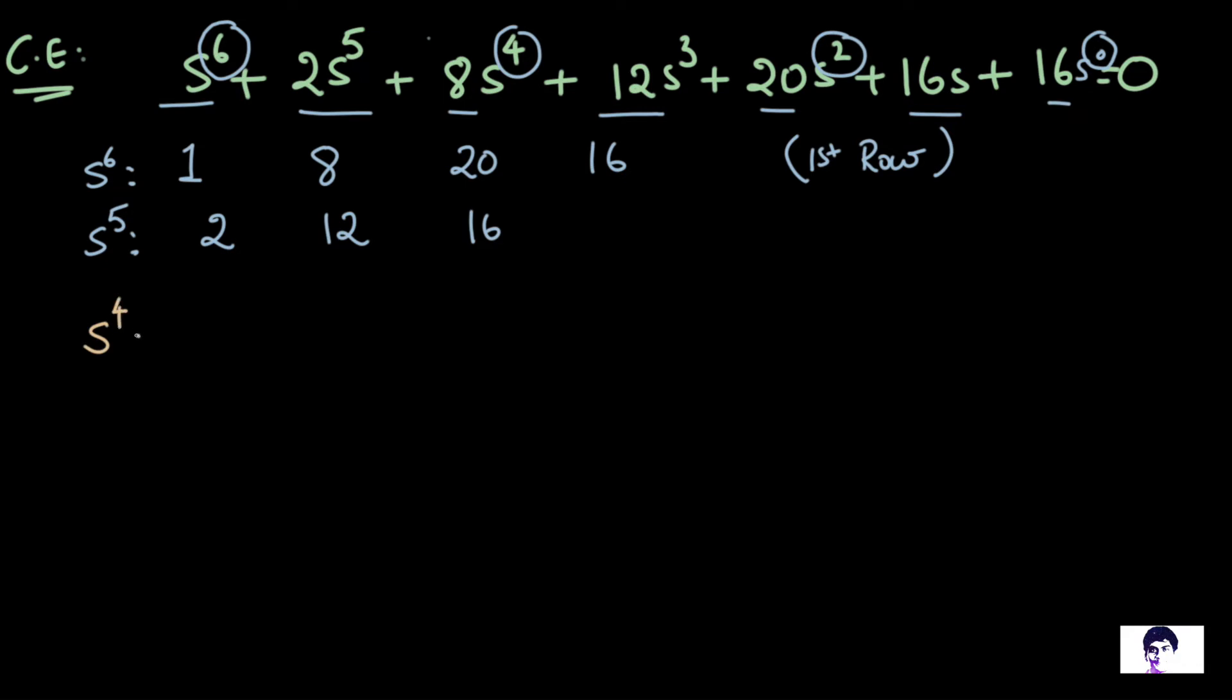Now I would need to build the Routh array, which means I have to find out the elements for the respective rows for S^4, 3, 2, 1, and finally S^0. So now to build the elements of S^4, 2 is the first element of the preceding row. So I will multiply 2 into 8 minus 12 into 1 by 2. But wait a minute, the previous row actually has a common factor, a GCD or HCF, which is 2. So I can divide the preceding row by 2 to make my calculations easier and I am going to do just that.